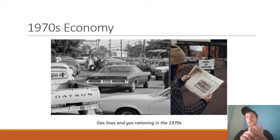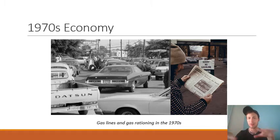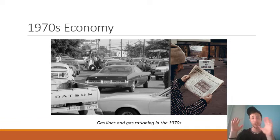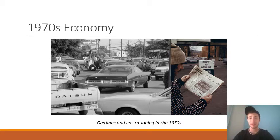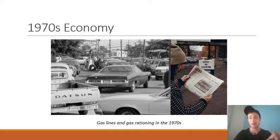The 70s are kind of when globalism really starts to begin, and a lot of the manufacturing jobs done in America start to get shifted overseas. The U.S. starts to become more of a service economy, and when you're not producing things, it's a little bit difficult to argue for rising wages. There were a number of reasons inflation was happening, but the big one people focus on is the lack of oil in the economy.